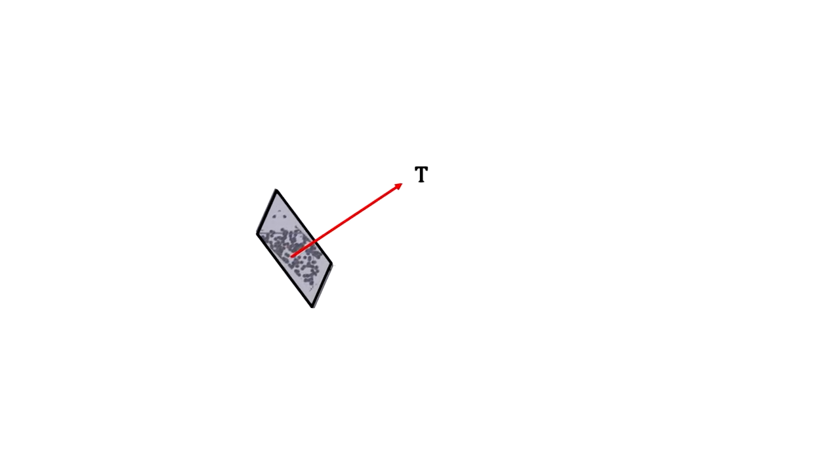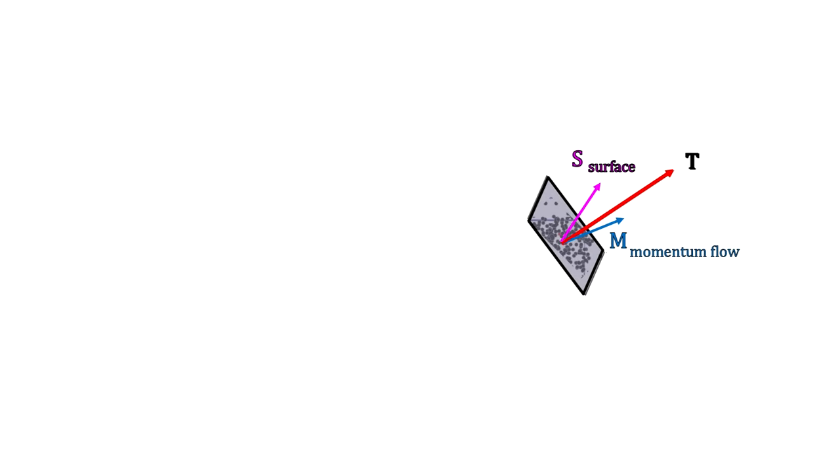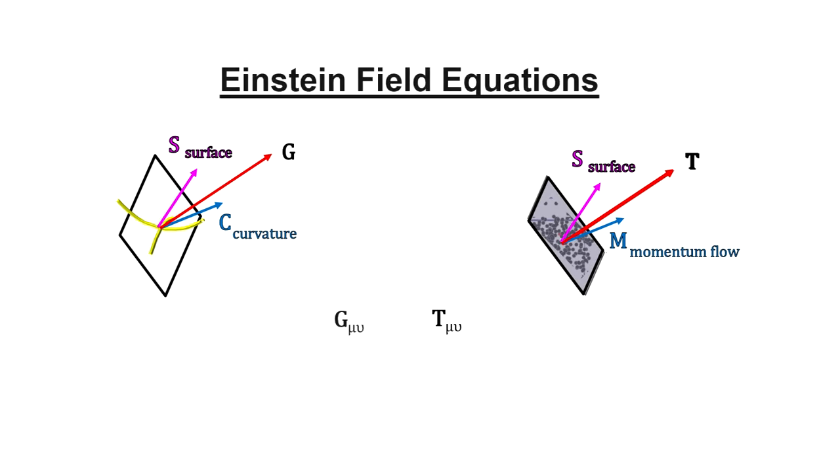The final step for the gravitational field equations is to determine the constant of proportionality between the Einstein tensor that encapsulates curvature volume and the energy-momentum tensor that encapsulates the total energy density.